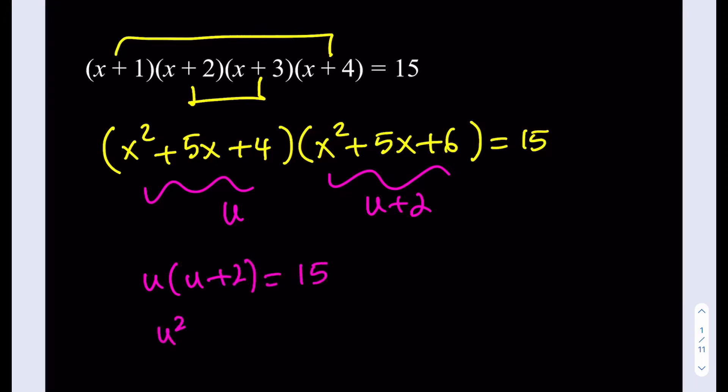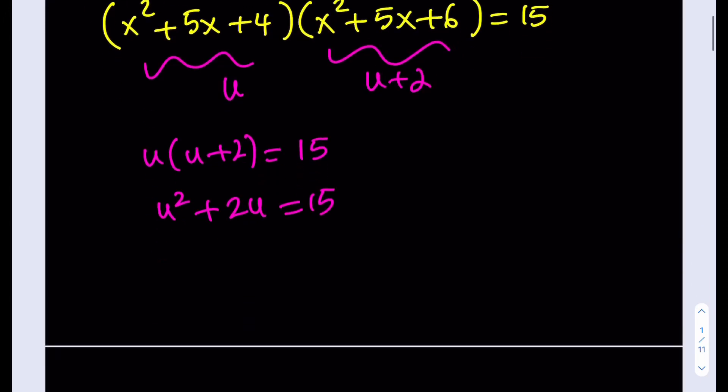And then I'm going to distribute: u² + 2u = 15. And then I will subtract 15 from both sides and make it a quadratic equation. u² + 2u - 15 = 0. So as you know, this is a factorable equation. So I can write it as (u - 3)(u + 5) = 0.